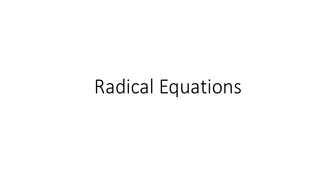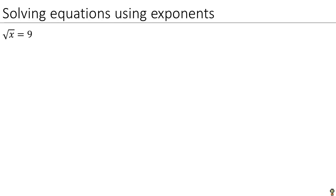Now it's time to put our knowledge of roots to use in order to solve radical equations, which are just as much fun as they sound. Let's start off with a simple example. If we take an equation like the square root of x equals 9, this is something you can solve just by staring at it for a little while — 81 is the solution, because the square root of 81 is equal to 9.